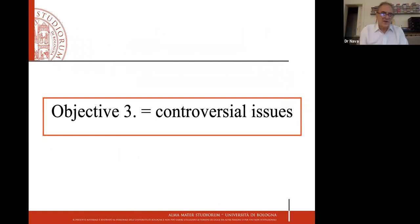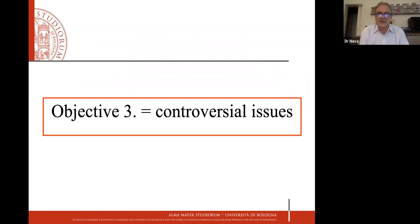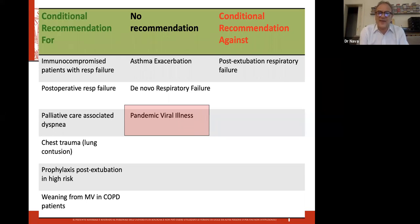Controversial issues — this is the last part, and I will spend a bit more time because I find these topics quite hot. I'm not going to deal with asthma exacerbation, mainly because there is not a single randomized study dealing with asthma exacerbation and acute respiratory failure. I will deal here only about pandemics and de novo respiratory failure.